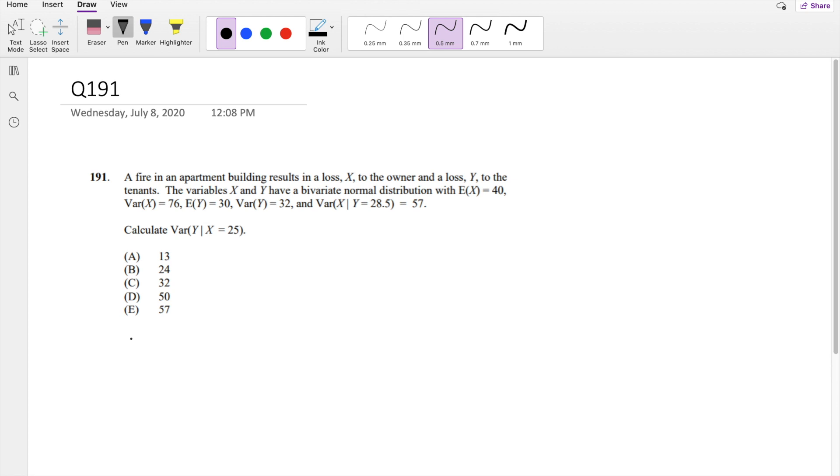Okay, I assume you already attempted it, let's just dive right in. So the fire department, they give you all this information, and then finally they give you this. But the variance that we're actually trying to find is what is the variance of y given x is equal to 25, so that's exactly the opposite of this information given here.